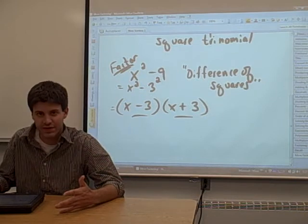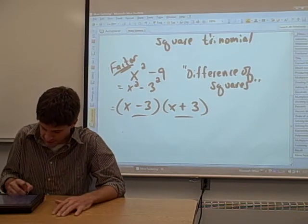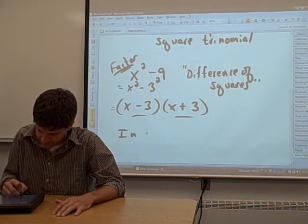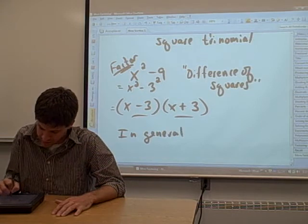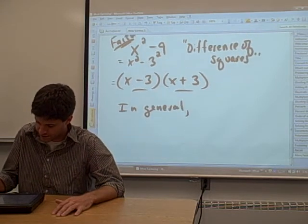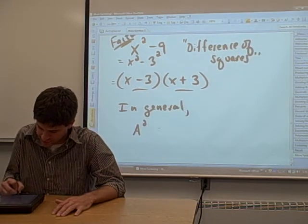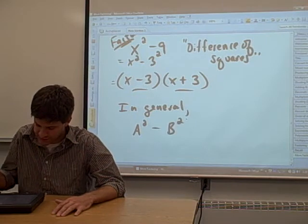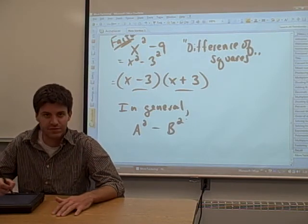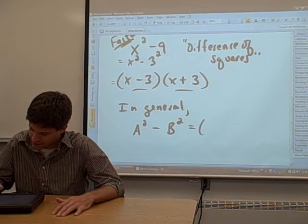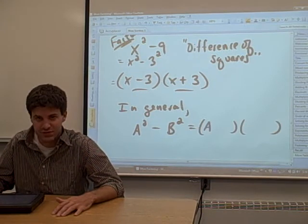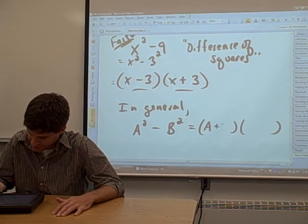Now again, this is a special case. In general, the equation looks like this for a difference of squares. You have something squared minus something else squared. That's the difference of squares. It can always be factored into the first thing plus the second thing.